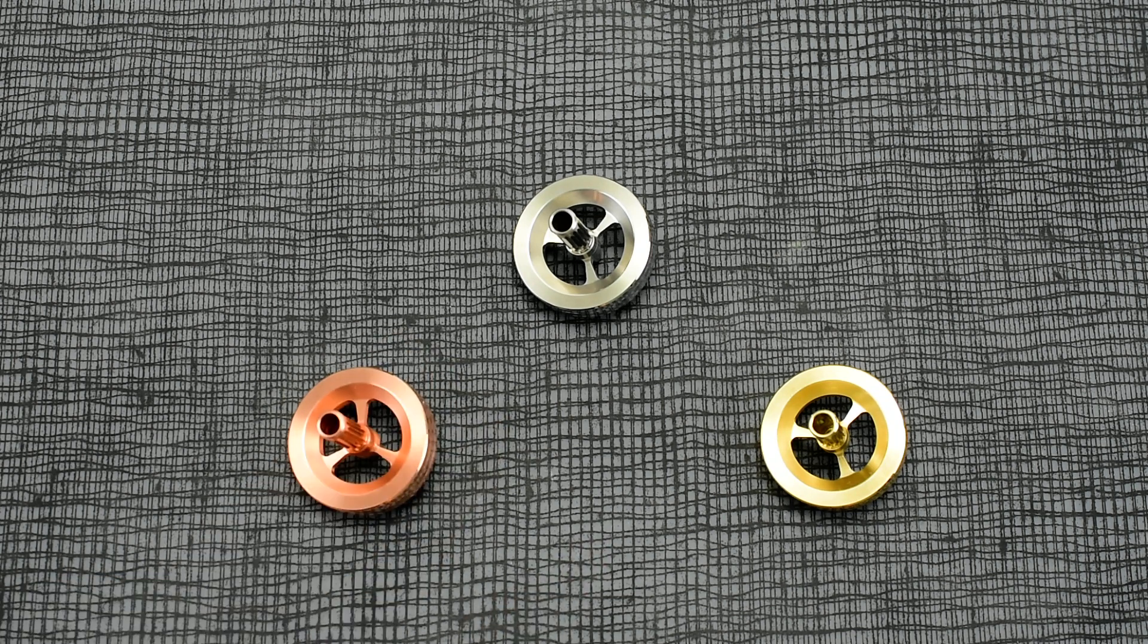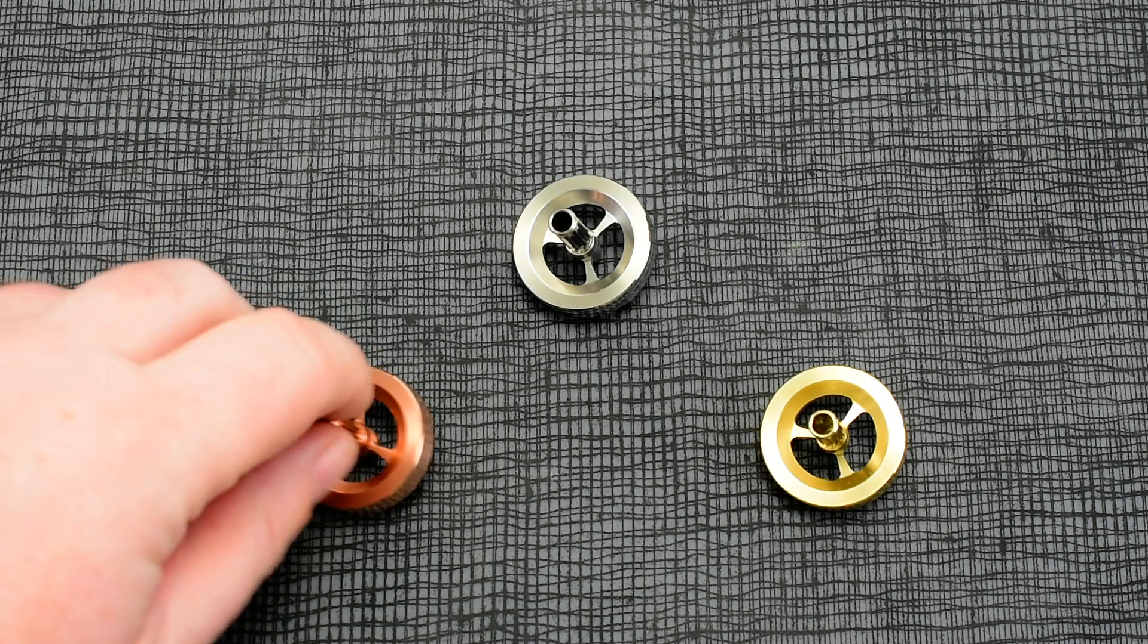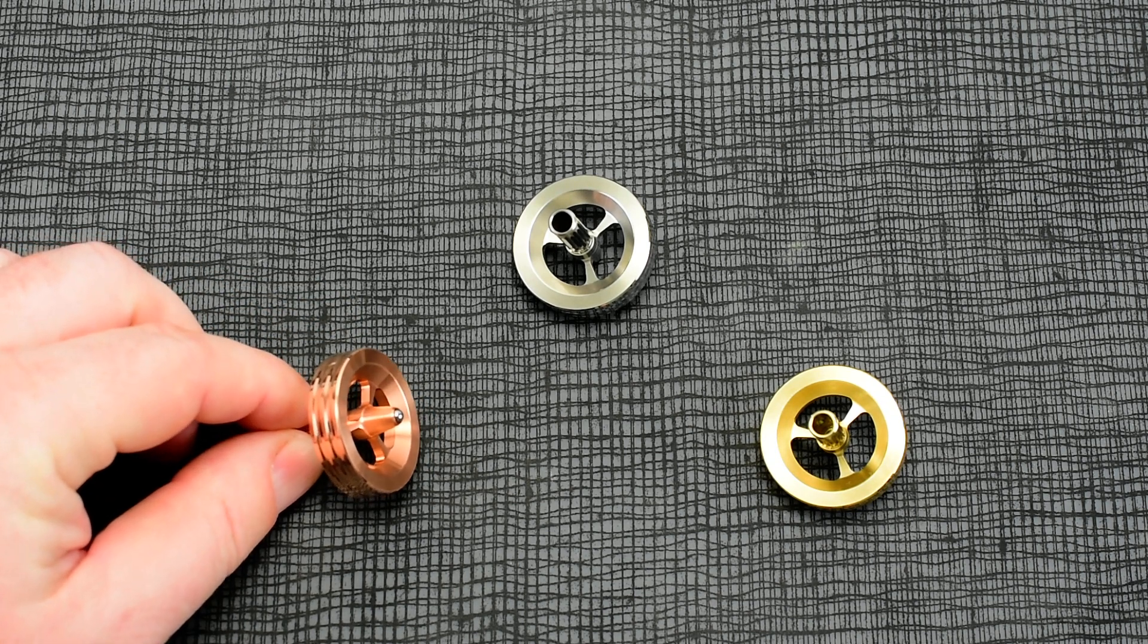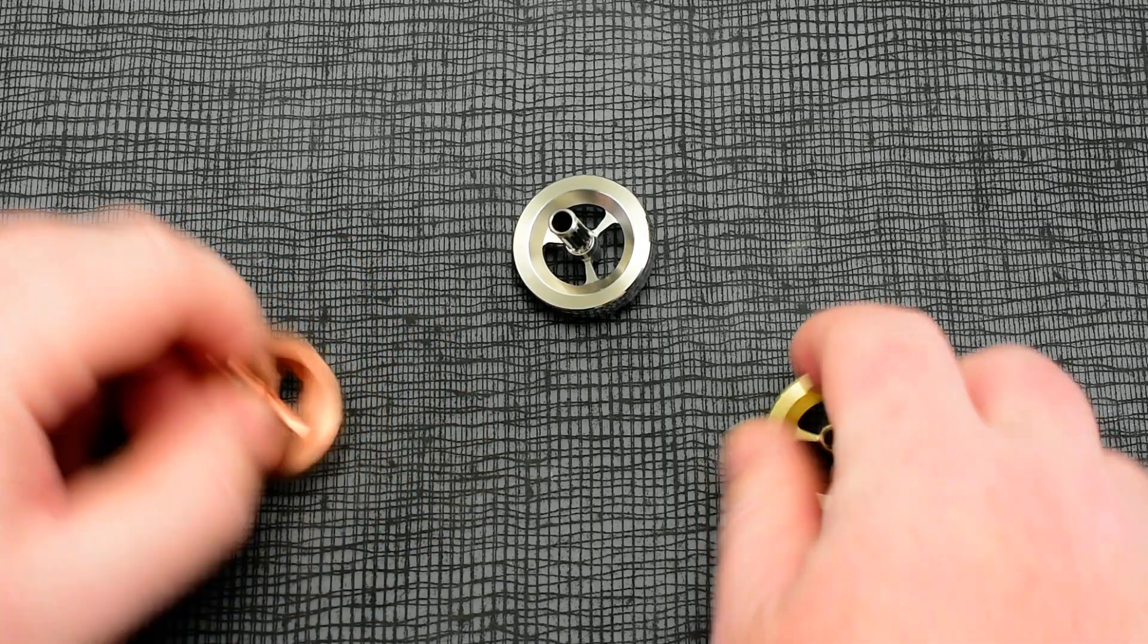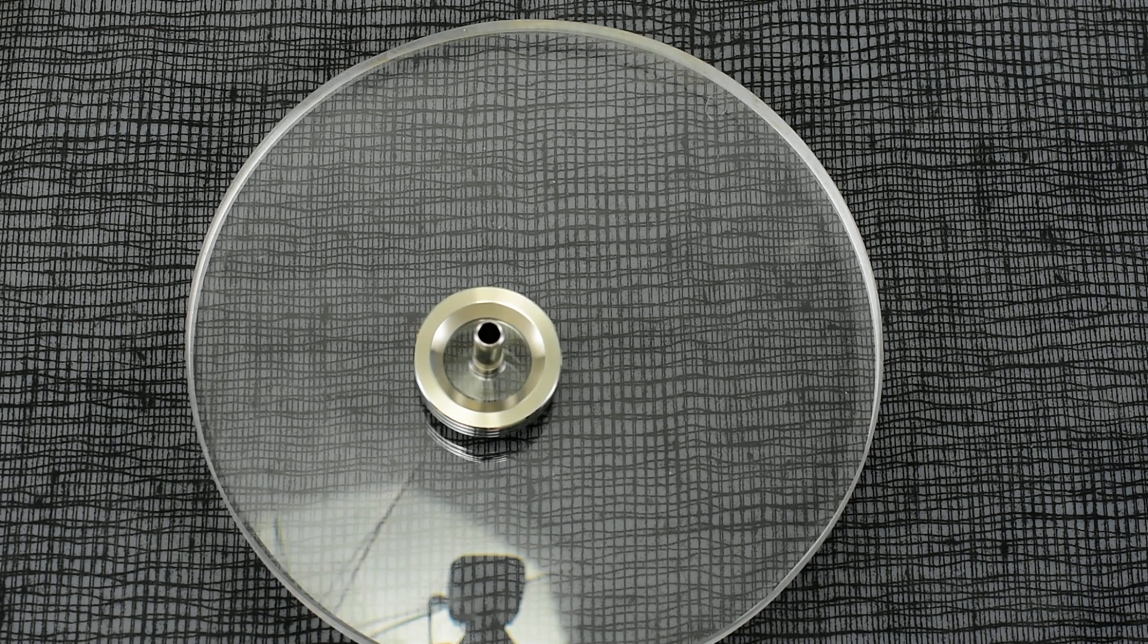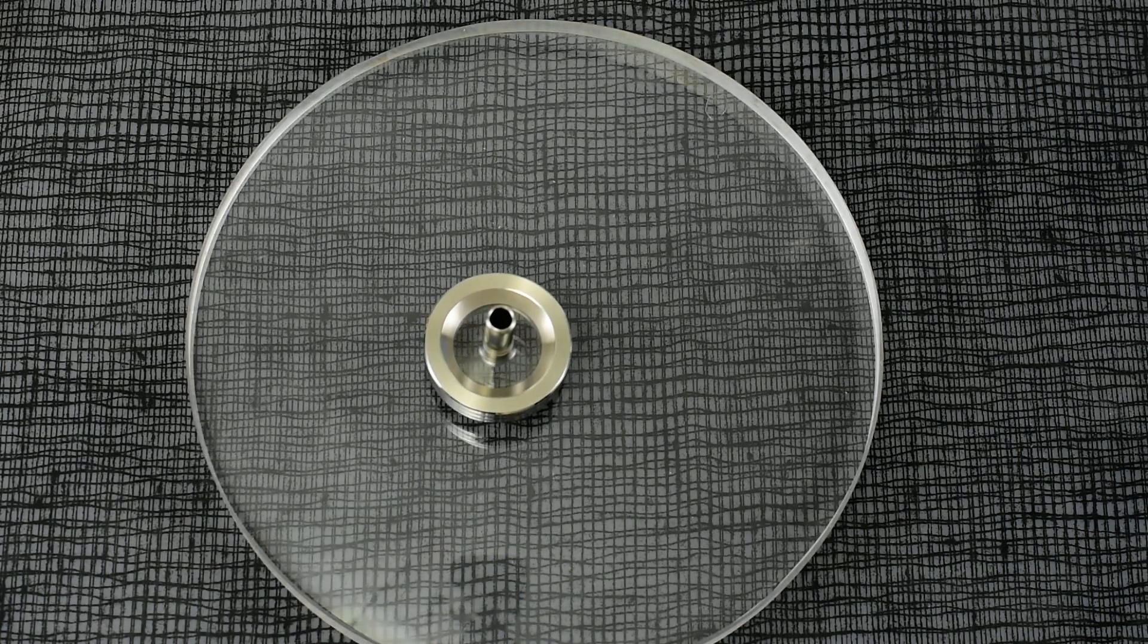We're here to talk about the version twos. Everything else is pretty much the same - the same grip, clearances, all that. Let's give one of these babies a spin. Let's go with the stainless steel.